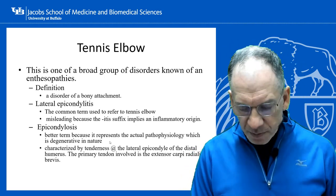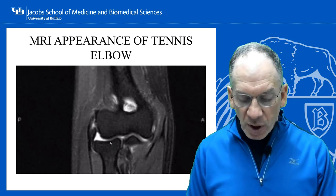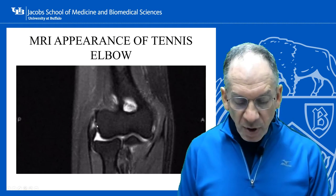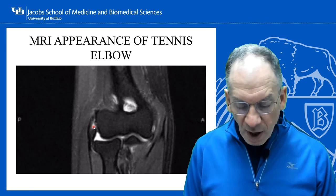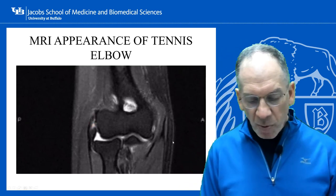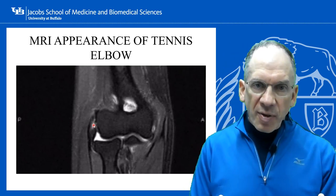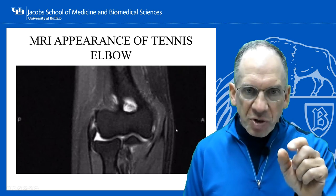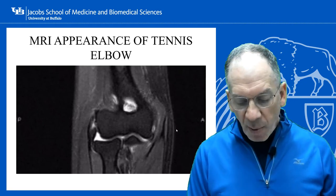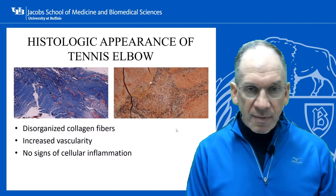In tennis elbow or lateral epicondylitis, there is degeneration of the origin of the extensor carpi radialis brevis (ECRB). On MRI, the tendon origin — which should be uniformly dark on both T1 and T2 — instead shows abnormal signal by the ECRB origin, indicating fluid related to attritional tearing. Histologically you see disorganized collagen fibers and vascularity, with no signs of cellular inflammation — which is why calling it epicondylitis doesn't really make sense.